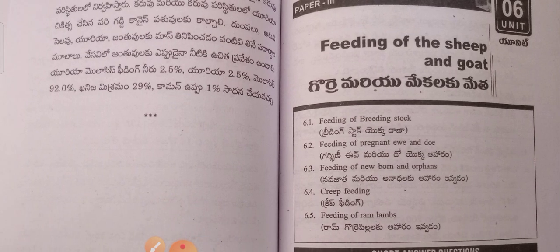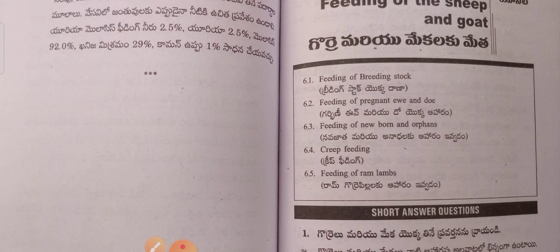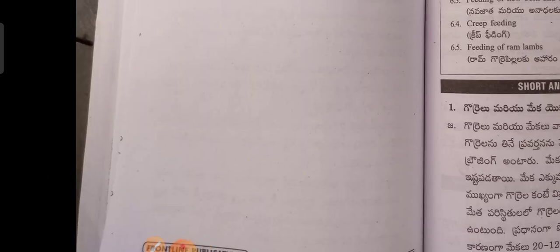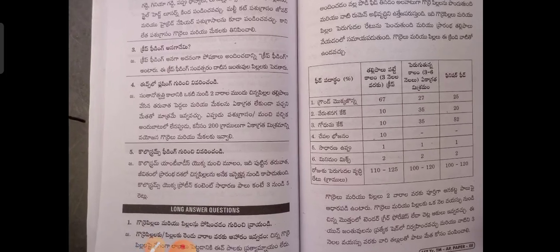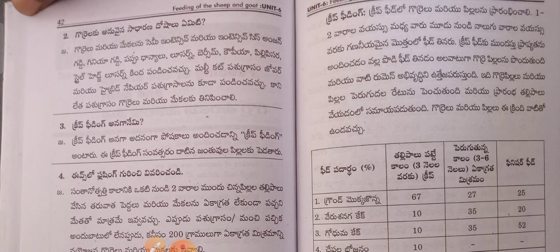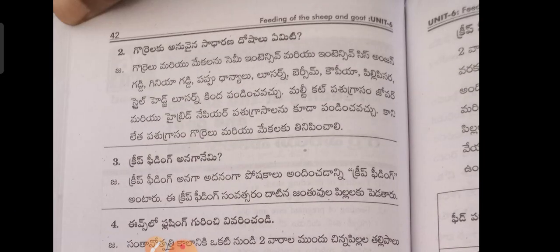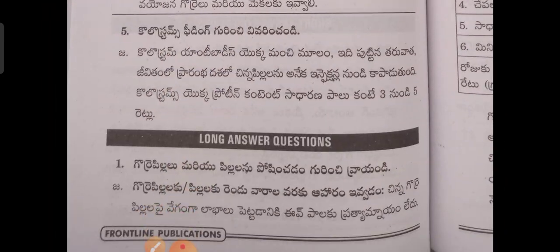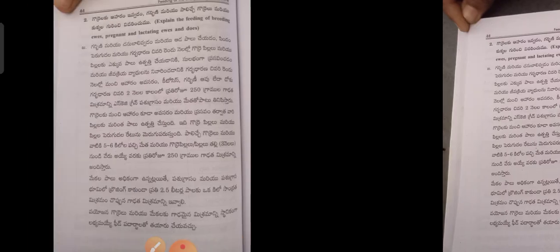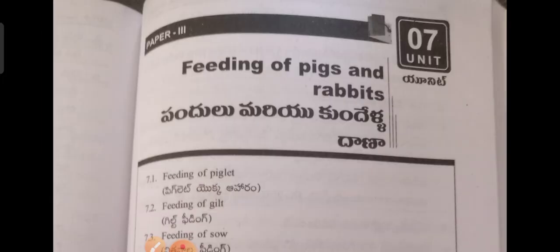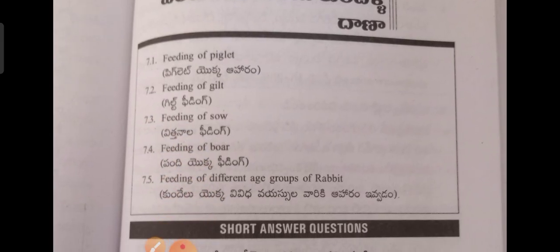Sixth unit: Feeding of Sheep and Goat. There are five sub-topics and nine short-answer questions. Important long questions include the third, fourth, and fifth questions, covering topics on kundela (sheep) feed and fodder.